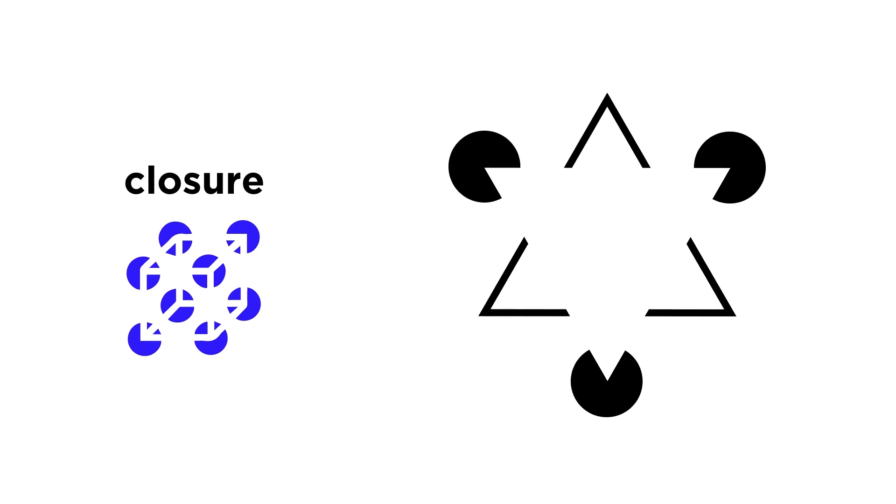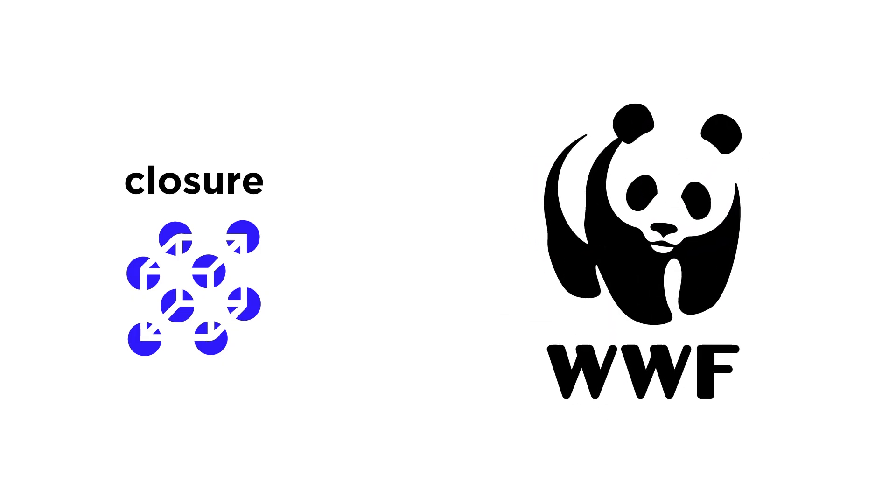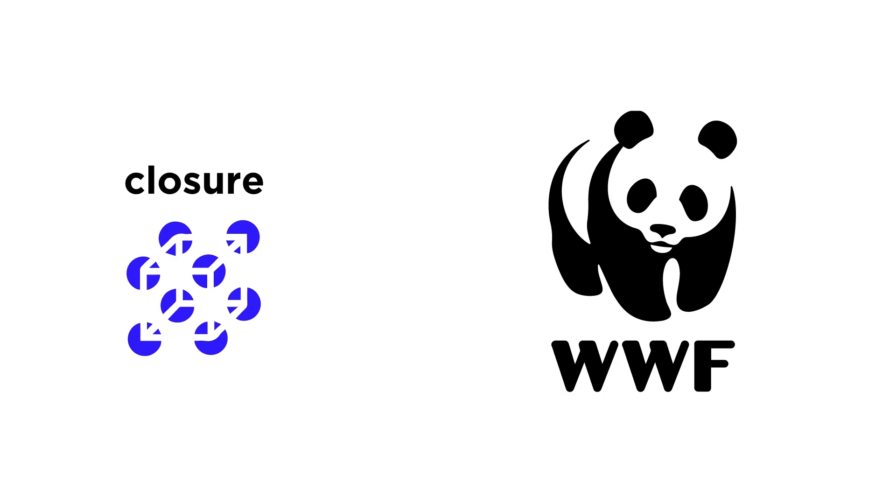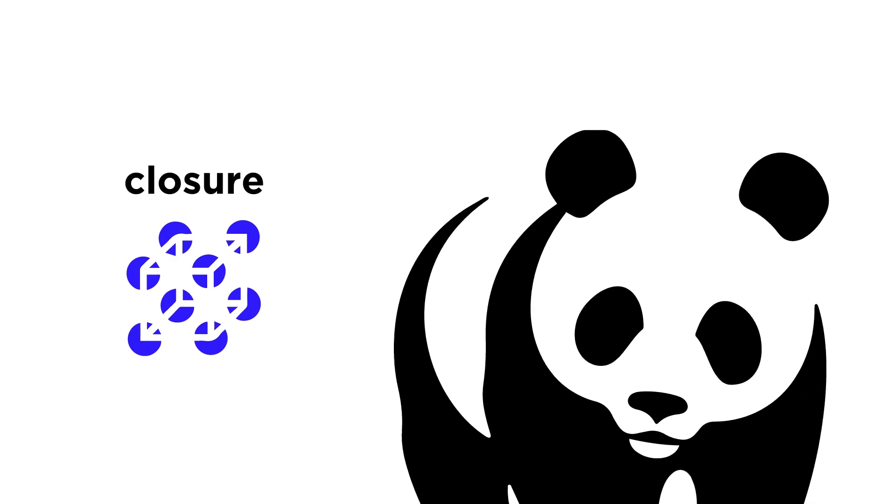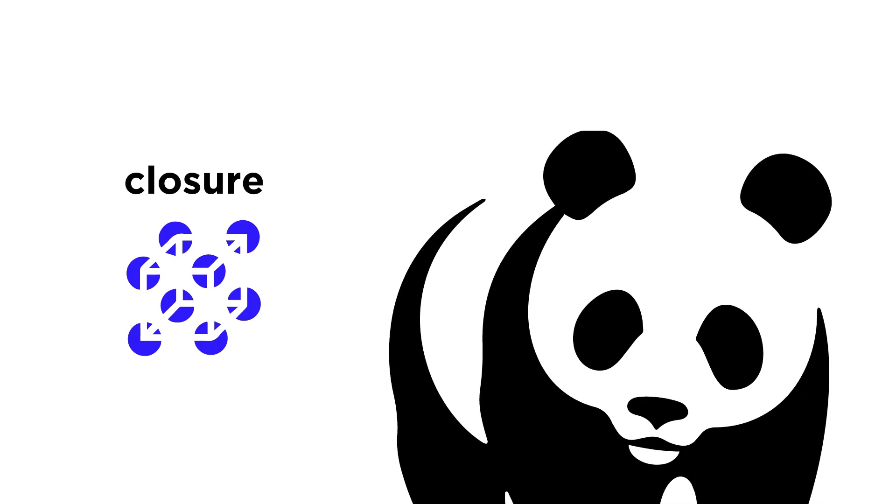The principle of closure states that our minds tend to complete figures even if the picture is incomplete or partially hidden by other objects. Look at this panda in the World Wildlife Fund logo. There are no lines connecting its ears to the top of its head. Even so, your mind looks at that image and completes the circle of the panda's head. If a shape's border is missing, we tend to see the shape as complete and ignore the gaps entirely.